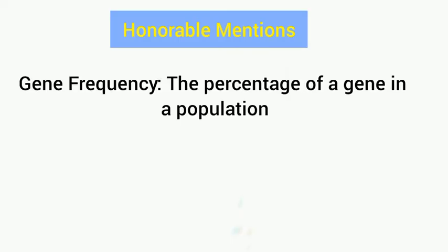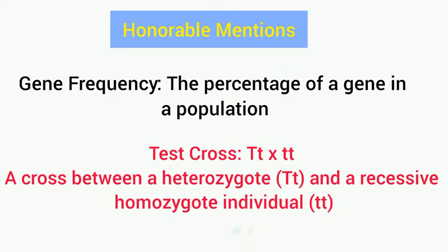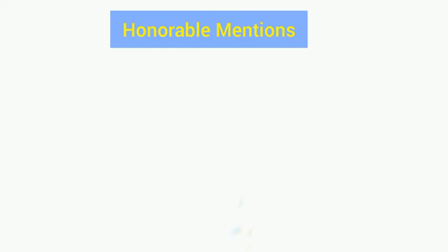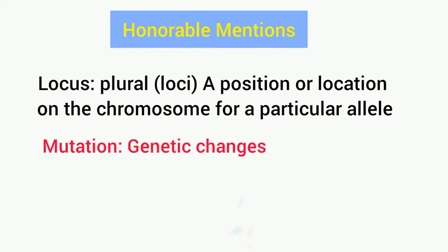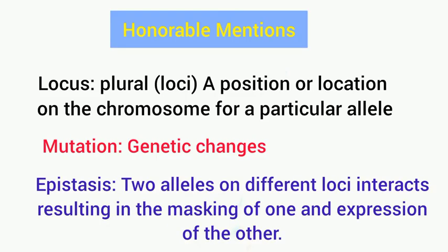Other key terms: gene frequency is the percentage of a gene in a population; test cross is a cross between a heterozygote and a recessive homozygote individual; locus (plural loci) is the position or location on a chromosome for a particular allele; mutation simply means genetic changes; and epistasis is when two alleles on different loci interact together, resulting in the masking of one and the expression of the other.